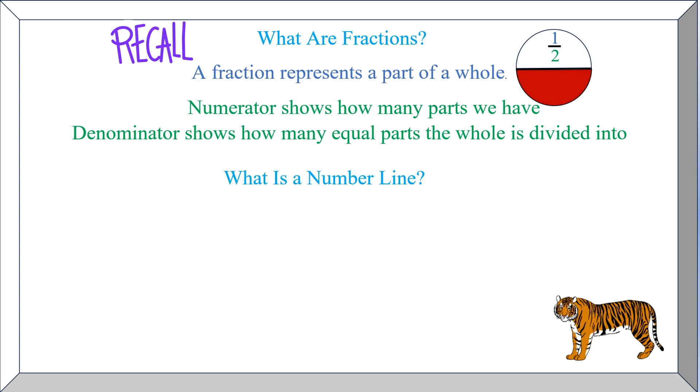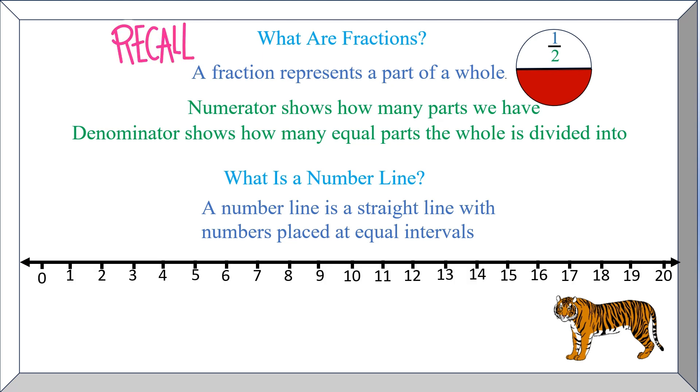Now what is a number line? A number line is a straight line with numbers placed at equal intervals. Fractions can be plotted on the number line to show their relative size.